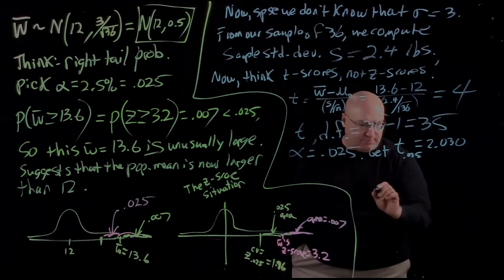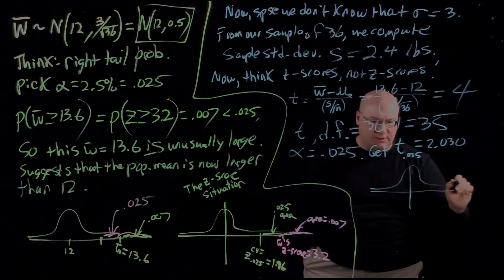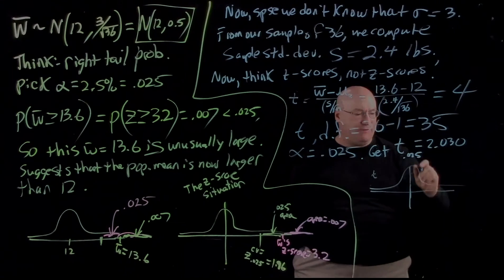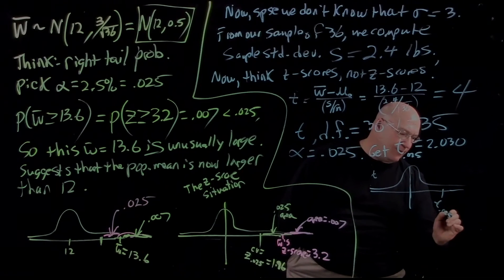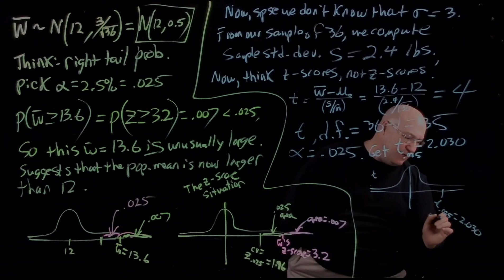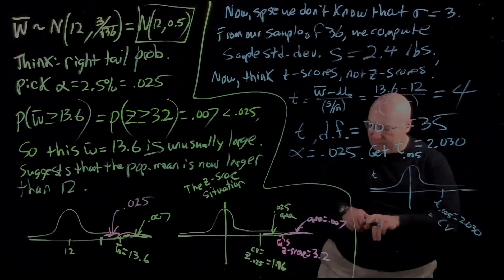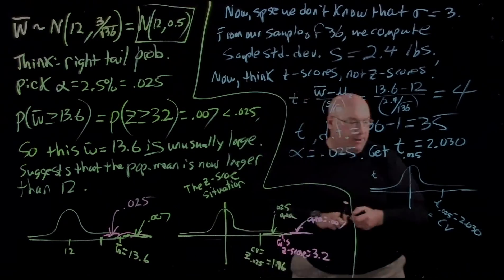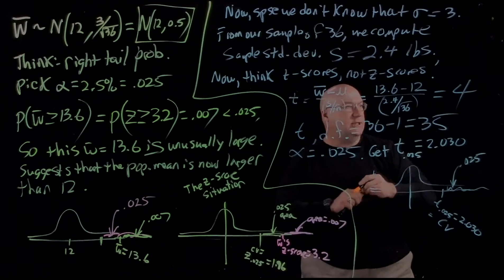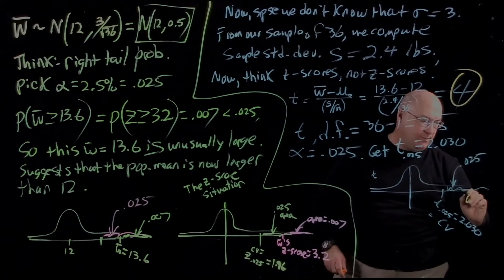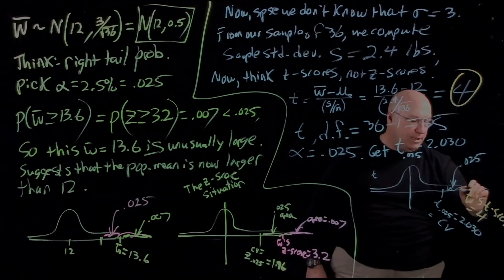So what that says is, let's get the picture here. The T random variable here, this is T with degree of freedom equal to 35. My cutoff T score is T.025 is 2.030. That's my critical value beyond which I consider a T score to be unusual. And of course, the area here is 0.025. And what I get is this value I calculated, W bar's T score is 4, way out here.